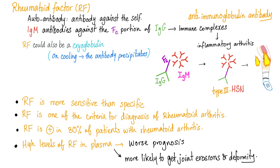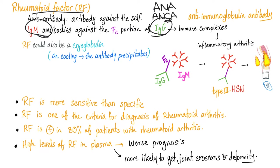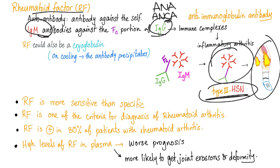Rheumatoid factor: if ANA antibodies were antibodies against the nucleus, and anti-neutrophilic cytoplasmic antibodies were antibodies against the cytoplasm, rheumatoid factor is an antibody against an antibody — like a dog chasing its tail. This leads to an immune complex that causes joint inflammation, in this case rheumatoid arthritis. It's sensitive for rheumatoid arthritis, but less specific.